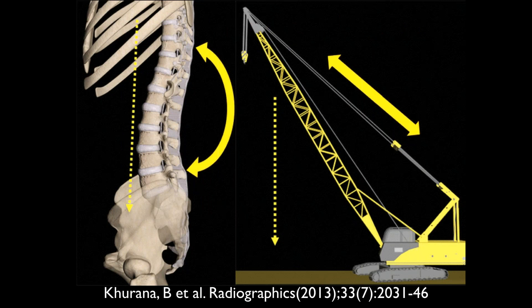The spine has to support a lot of weight and typically the weight of the body tends to pull the spine forward, placing a lot of extensor forces on the posterior elements. With trauma — especially forced flexion — you can get tears and fractures of the posterior elements, compressions of the anterior elements, and obviously displacement and rotation injuries.